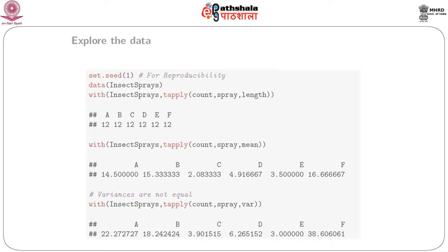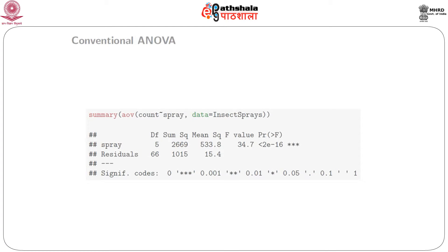We have 12 observations for each spray type. If we run an analysis of variance using 'aov(count ~ spray, data = InsectSprays)' and take a summary, we get the F value to be 34.702 and it comes out to be significant. So the effect of spray is significant, but the question is that we have issues about the homogeneity of variance.